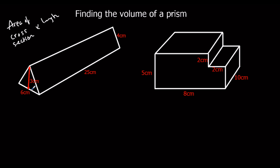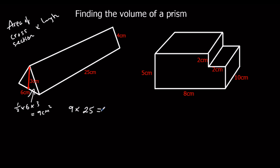So we'll start here. The area of the cross section is half times base times height, which is 9 centimeters squared. And it goes back 25, so 9 times 25, which is 225 centimeters cubed.